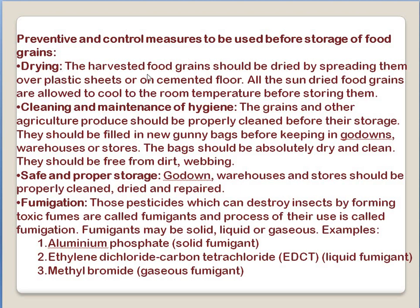As soon as food grains are harvested, they should be dried — not on the ground, but spread over plastic sheets, because the ground contains a lot of moisture that may transfer into the seeds. Moisture is a big danger for the seeds. They can be dried on a cemented floor as it does not release any moisture, but if on soil, they should be spread only on plastic sheets. After sun drying, the grains are allowed to cool to room temperature and then kept in the shade for a few days.